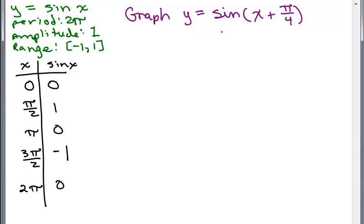Now we want to graph y equals sine of x plus π/4. So here's the trick. This time in parentheses — what are we taking the sine of — is x plus π/4. If we look at the chart for y equals sine of x, if x plus π/4 were 0 we know the sine would be 0; if it were π/2 we know the sine would be 1. So the trick is to find values of x so that the sine will be 0, 1, 0, -1, and 0, as it is for y equals sine of x.